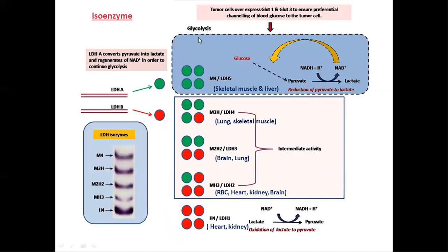The last method of enzymatic regulation is isoenzymes, which is an indirect method of enzyme regulation. Isoenzymes perform a similar catalytic function but have different amino acid sequences. These isoenzymes also produce different kinetic parameters, such as different KM values, Vmax values, and V-not values.